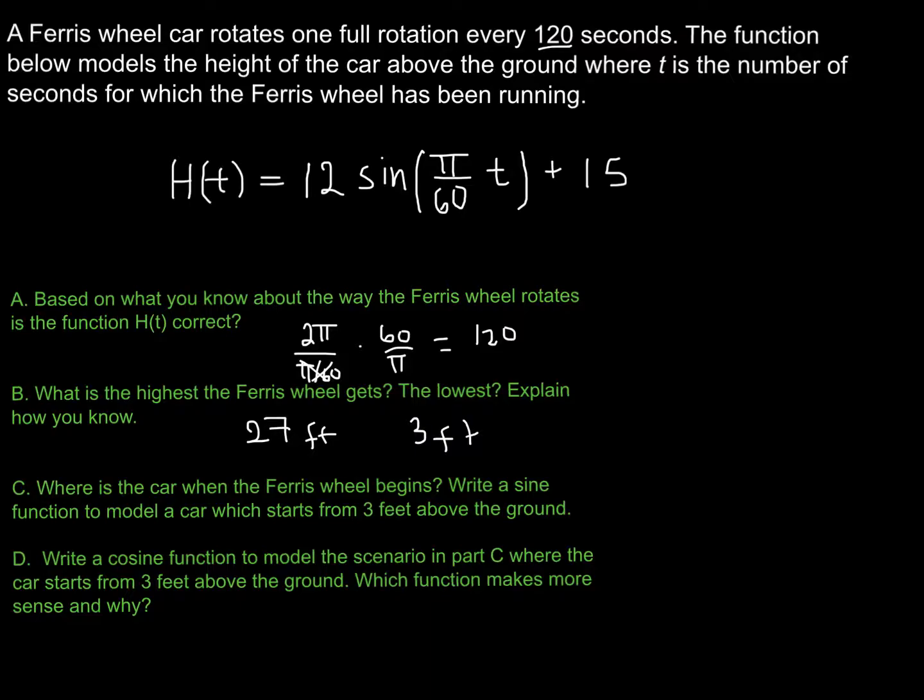And the way that I know that is if I'm looking at my function here, this is the midline, right? And what am I going to be adding to 15? Well, I'm adding 12 times sine of π over 60 times t. Well, what's the biggest value sine can ever have? That's 1, right? Sine of π over 2. So the biggest that this part of my expression can ever be is 12 times 1, which would give me 12 plus 15 or 27. Similarly, the smallest that this value can ever be is when sine is at its lowest value, negative 1. And so negative 1 times 12 will be negative 12 plus 15 is 3 feet.